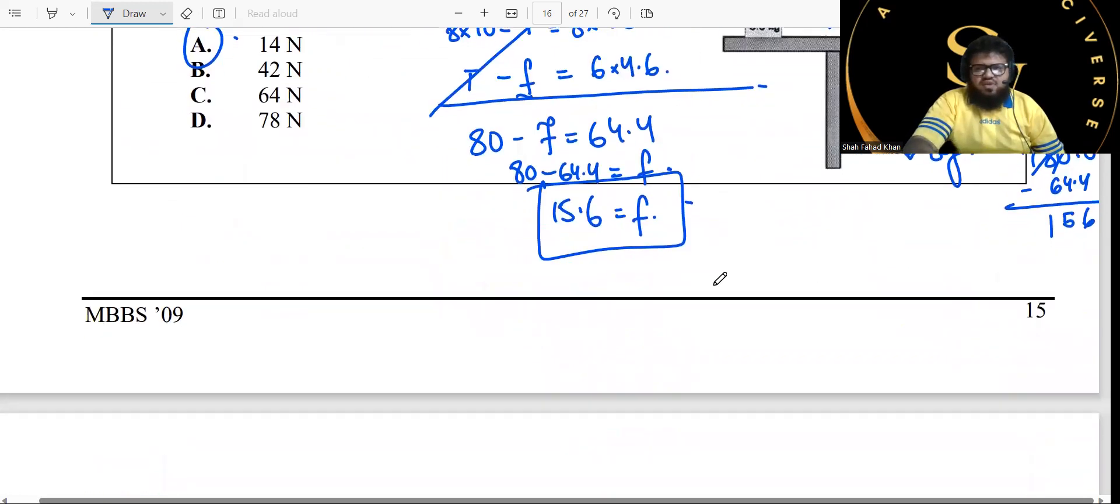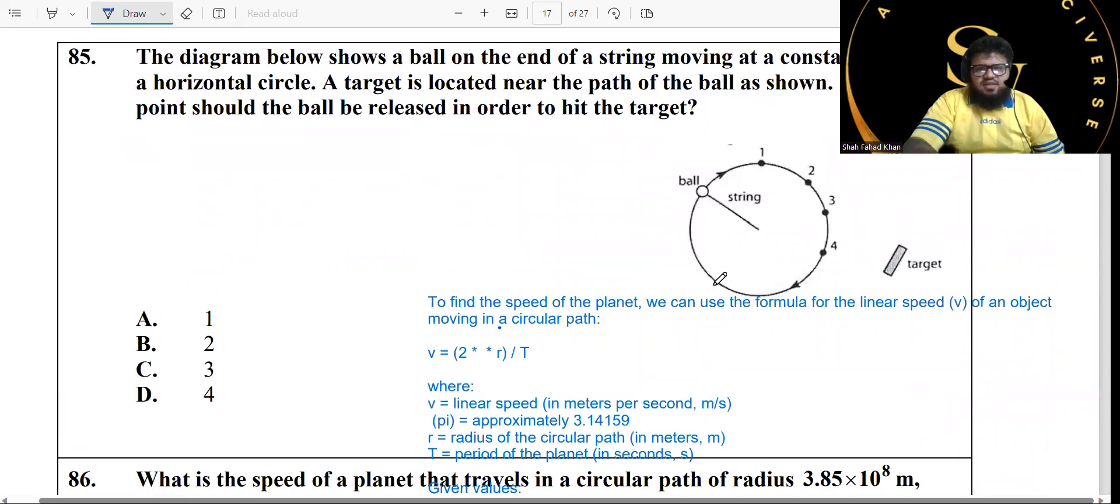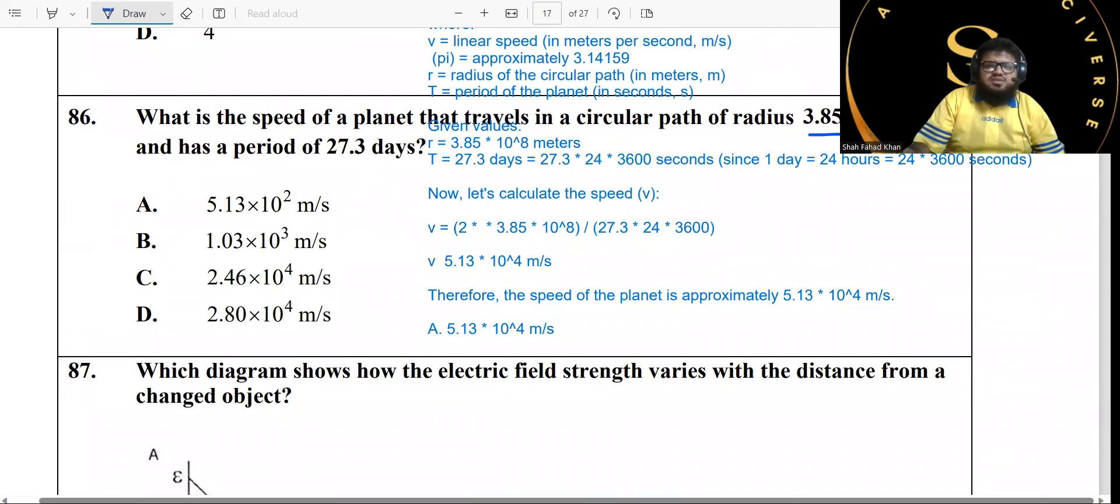This is the working we've been following in A levels as well. Problem 85: An object is moving on a circular path and you have a string right here. They're asking you at which point if you release this ball it will hit the target. You guys know that velocity is always tangent to the circle, so whenever you release the ball it's going to move straight from there. If you release it from 0.2, it's going to go straight and hit the target. So it's point 2, the answer. Problem 86: What is the speed of the planet that travels on a circular path of radius this much and has a period of this much?